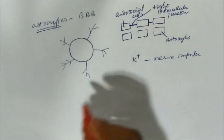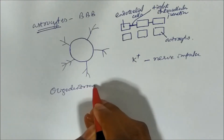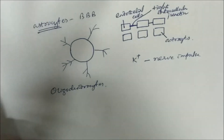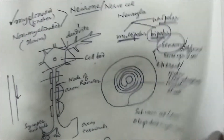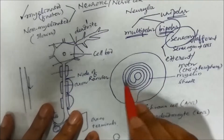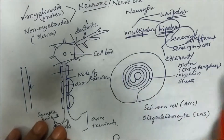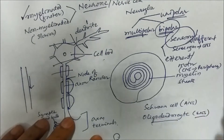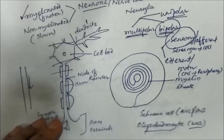Oligodendrocytes have already been discussed. Schwann cells were also discussed in the nervous system introduction class. They provide the myelin sheath surrounding the axon. In the CNS, oligodendrocytes provide the myelin sheath, while in the PNS, Schwann cells provide it.